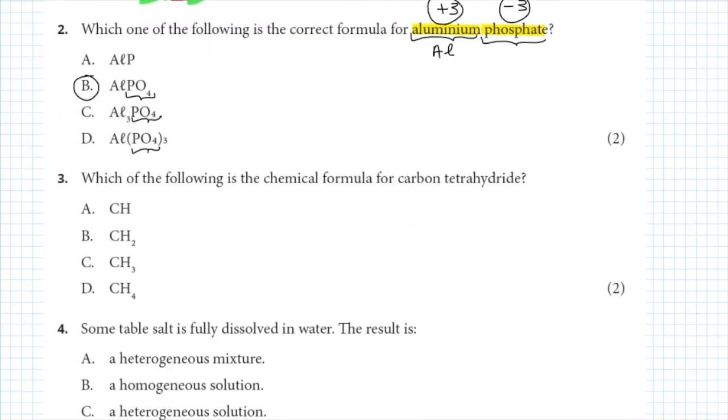Moving on to question 3: which of the following is the chemical formula for carbon tetrahydride? Carbon and hydrogen are both non-metals, so we're dealing with a covalently bonded substance. The prefix 'tetra' tells us that carbon is bonded to four hydrogen atoms.